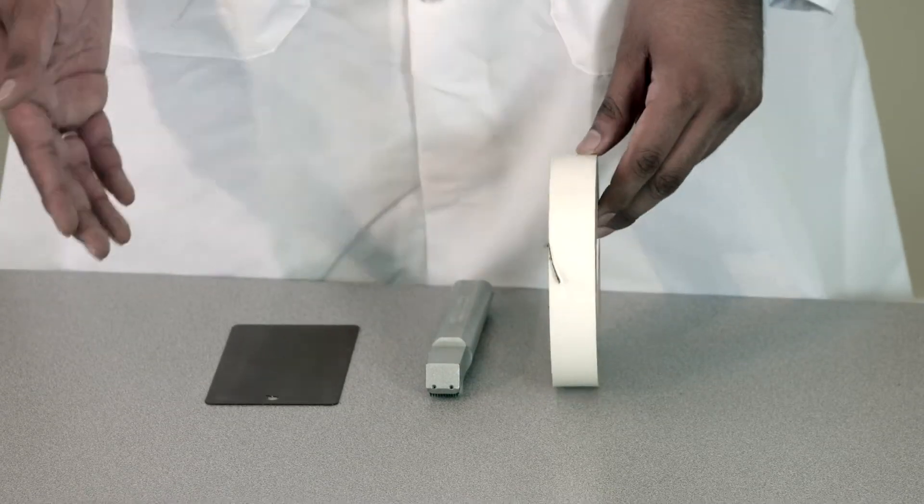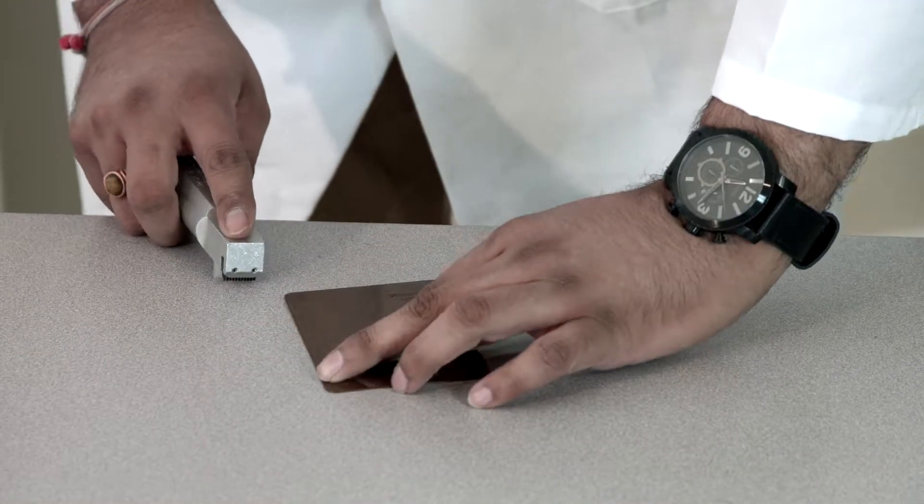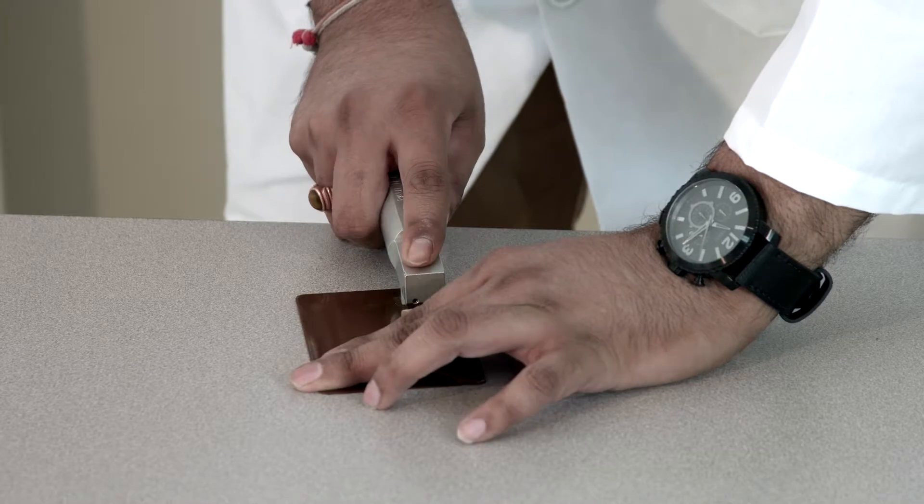So here is our sample chip to do the adhesion test. Using a scalpel, we're going to make two scratches. One is vertical and the second one is horizontal.